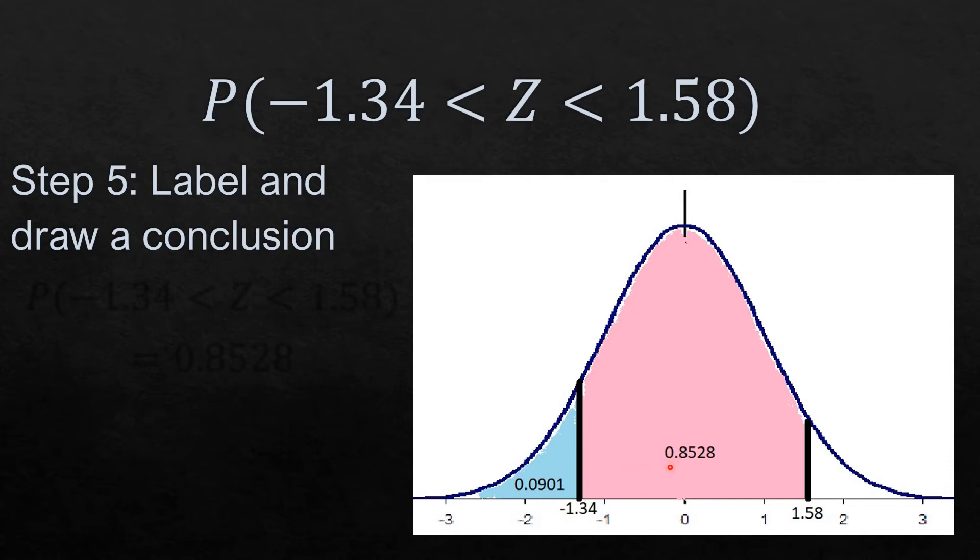I obtain 0.8528, so this is the area of the shaded region. In other words, the probability that Z is greater than negative 1.34 but less than 1.58 is 0.8528.